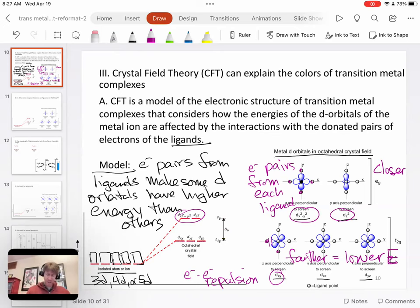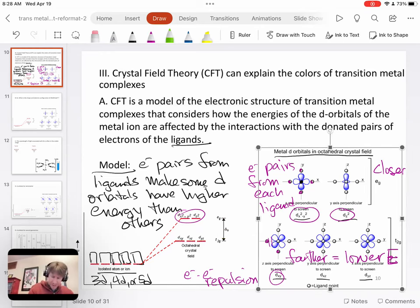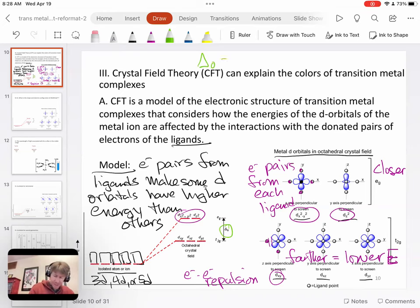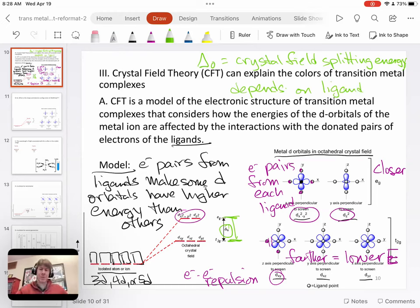So octahedral is going to have the splitting that, oh, I didn't talk about this little thing here. Delta O is the crystal field splitting energy. And as we'll talk about the crystal field splitting energy and exactly how big it is depends on the ligand. And last thing to explain, I think, might be these symbols here.